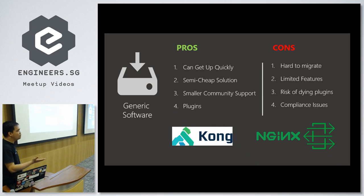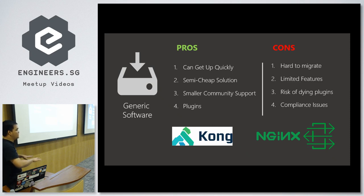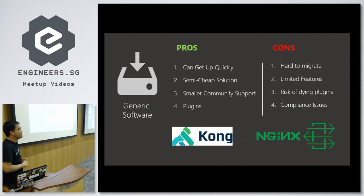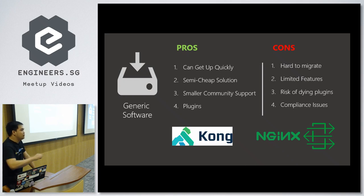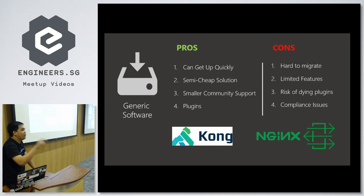The cons of generic software: it's hard to migrate — if you want to go to Azure you can spin up a VM, but replicating or scaling it efficiently is troublesome. You'll have limited features since open source products from small companies aren't always feature-rich. You also face the risk of dying plugins when the open source community stops building things. There are compliance issues too, since you never know what generic software does inside.